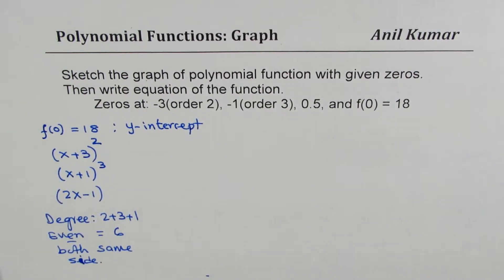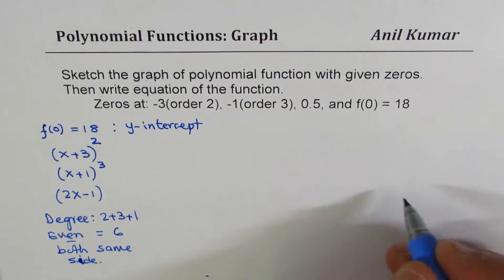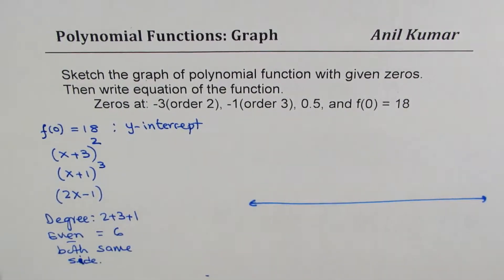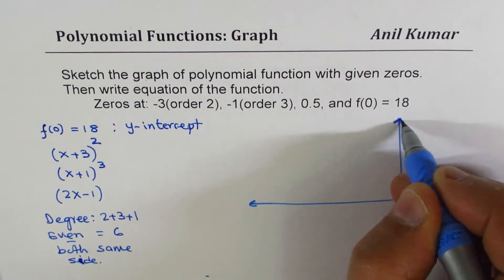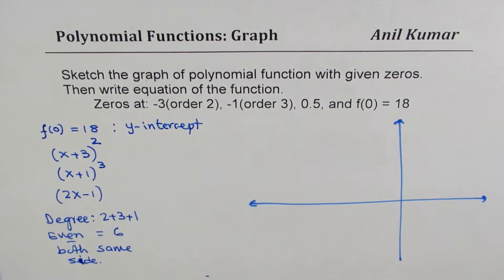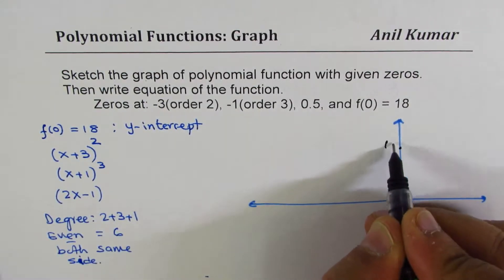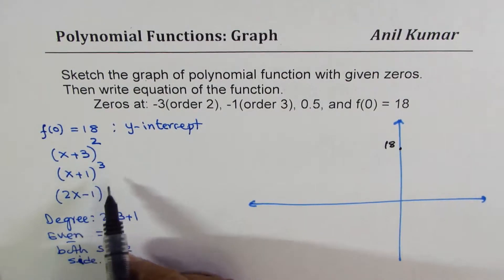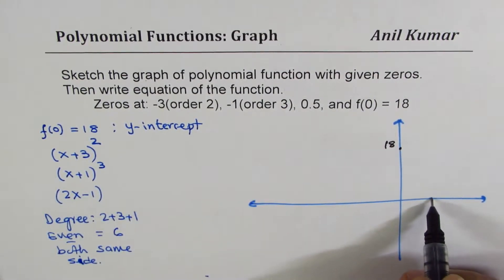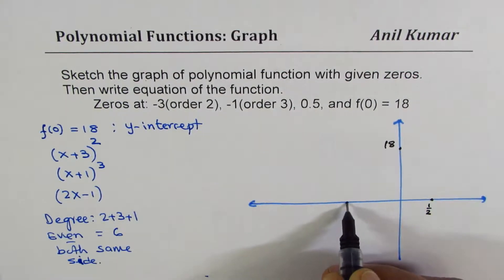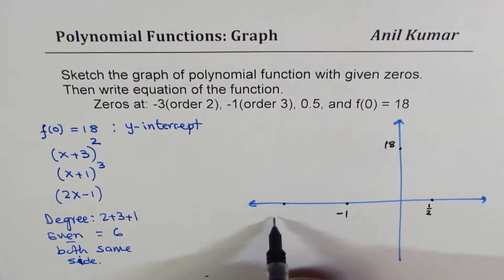Based on this, we can actually graph the function. So, let's say this is your y-axis. So, let's write down the y-intercept first. Let's say this is the y-intercept 18. Now, we are saying on the right side, we have one at half. Let's say this is half. Then, we have zero at minus 1 and at minus 3. So, let's say this is minus 1 and this is minus 3.